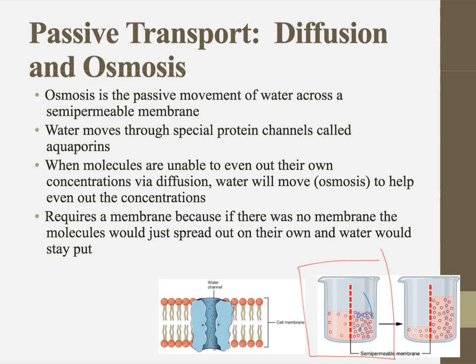If simple diffusion is not an available option, we get a process called osmosis. What I see happening here is this semipermeable membrane is not allowing these glucose molecules to move to the other side, maintaining a high and low concentration on either side. So some of this extra water on one side is going to move over to give the glucose molecules that are really crowded more room to spread out, ending up with equal concentration. That movement of water is called osmosis.